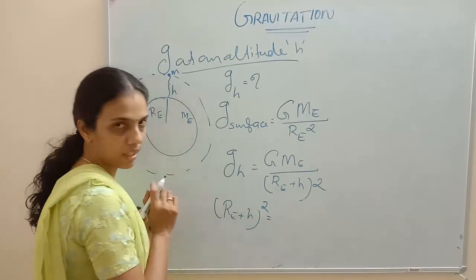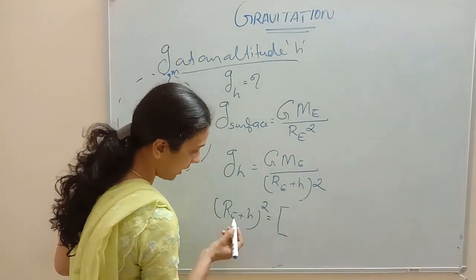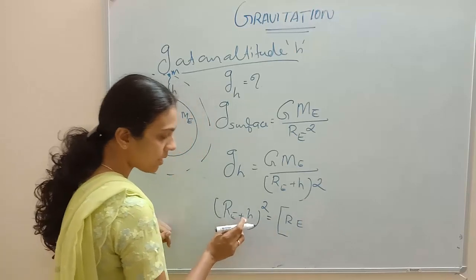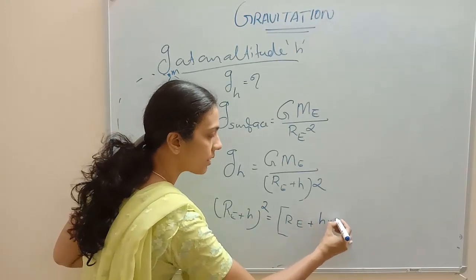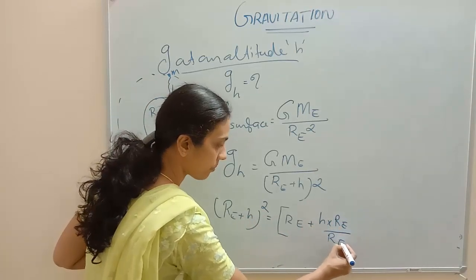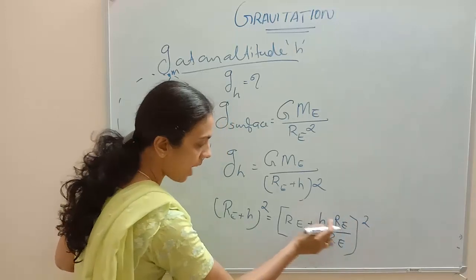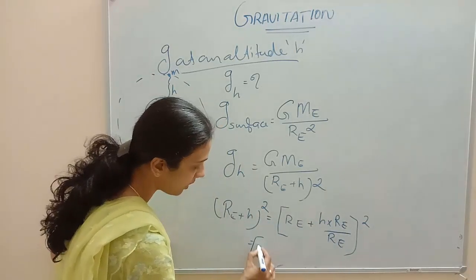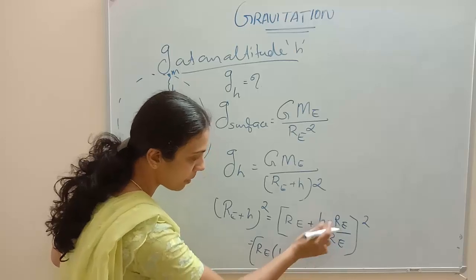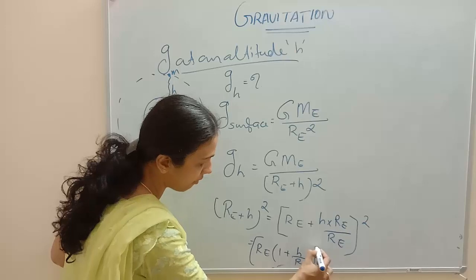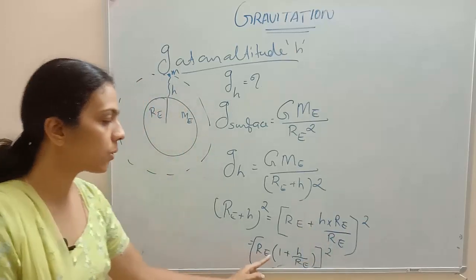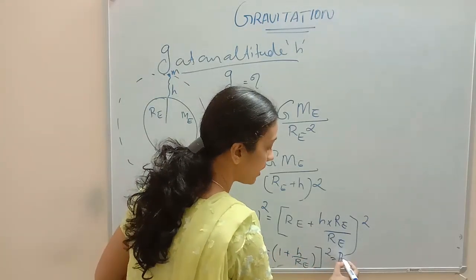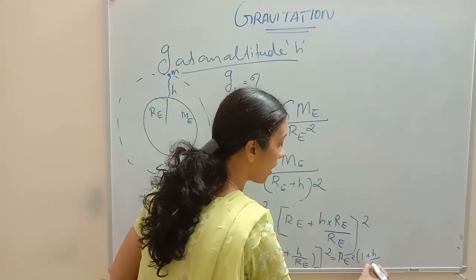I am taking R_E outside from the term R_E plus H squared. By multiplying and dividing by R_E, we can write R_E plus H as R_E times the quantity 1 plus H over R_E. So R_E plus H whole squared becomes R_E squared times the quantity 1 plus H over R_E, whole squared.